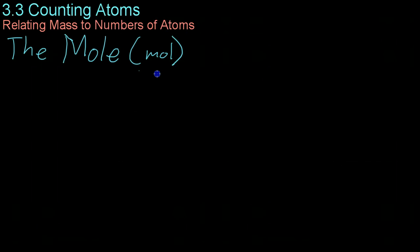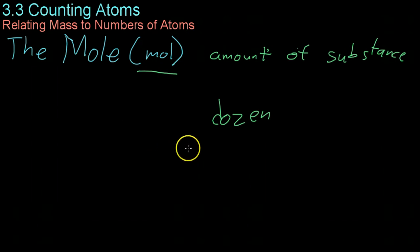Now the mole, which you can abbreviate by taking off the E, is the international standard unit for amount of substance. Just like how a dozen is an amount of substance. You can have a dozen dump trucks or you can have a dozen eggs, but you still have 12 of either. It's just a different mass and different things.